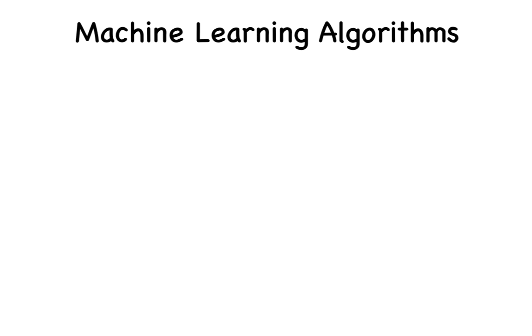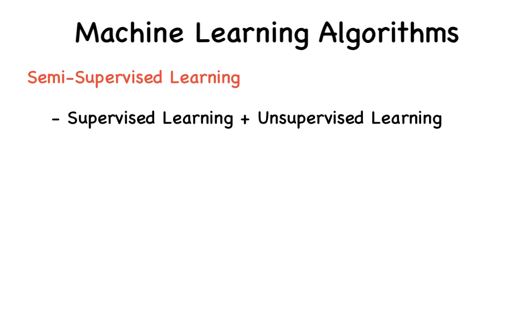The third type of machine learning algorithm is semi-supervised learning. This is a combination of supervised and unsupervised learning approaches.